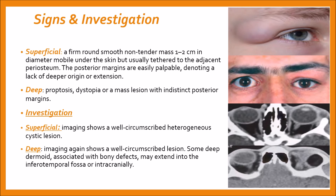Here in the pictures, this is the superficial lesion in the child. Here you can see a deep lesion has caused dystopia in the eye. On CT scan, you can see a superficial well-circumscribed lesion. This deep lesion on CT scan is also well-circumscribed, but has caused some bone remodeling, which is not present in the other eye.